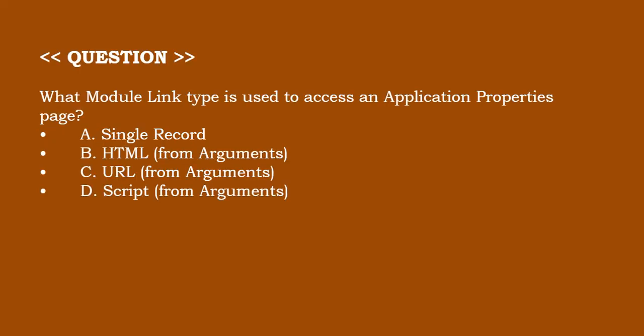The question is: what module link type is used to access an application properties page? Option A: single record. Option B: HTML from arguments. Option C: URL from arguments. Option D: script from arguments. The correct answer is option C.